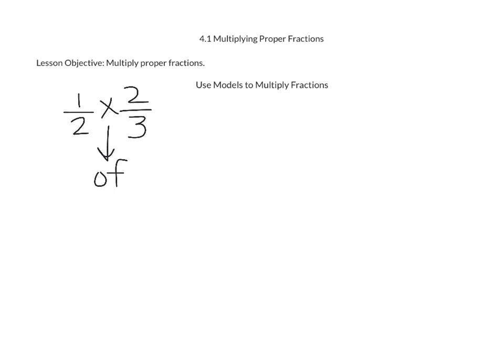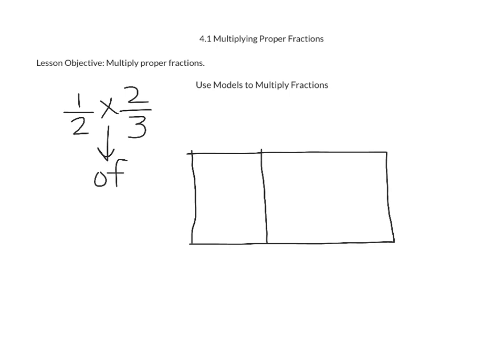To draw a model, we are going to start by drawing ourselves a rectangle. Then we are going to take a look at the second fraction. Our second fraction is two thirds, so we are going to start by splitting our rectangle into three equal pieces. And since two thirds is our fraction, we are going to shade in two of the three pieces we created.